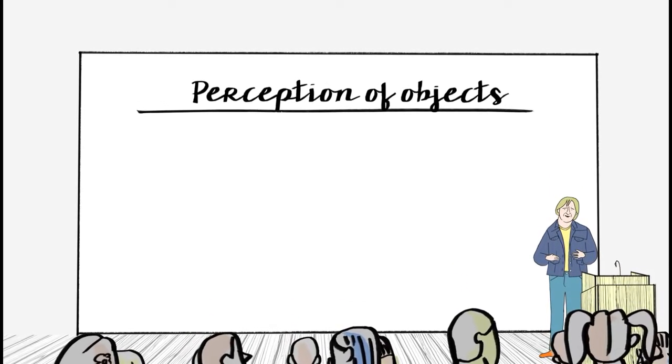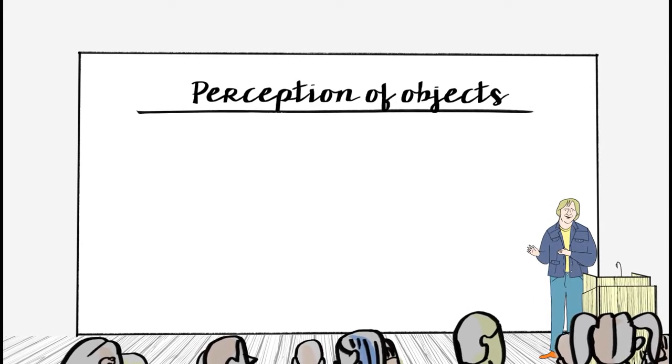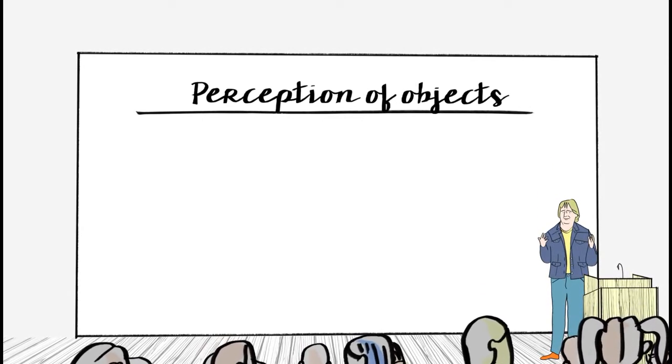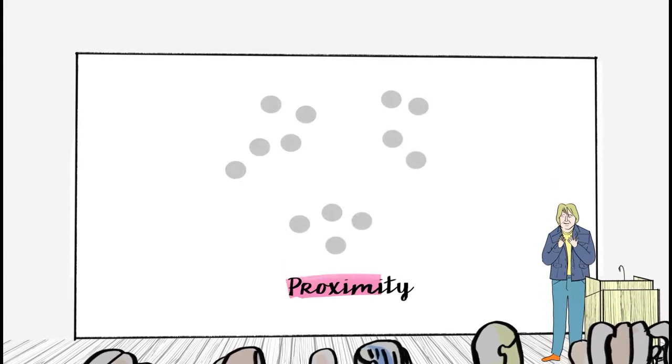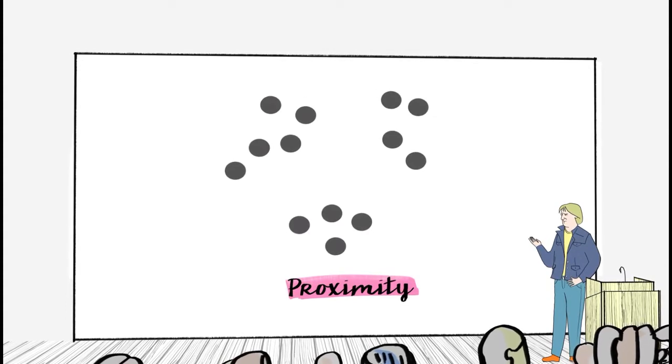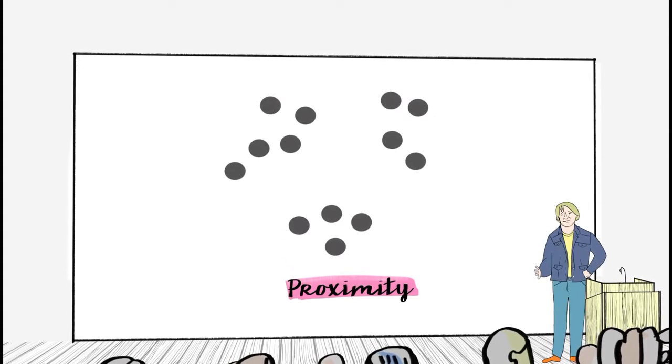And the Gestalt psychologists proposed principles that lead us to segment one thing from another. So one example of such a principle is proximity. Things that are close together relative to other things tend to be seen as distinct.